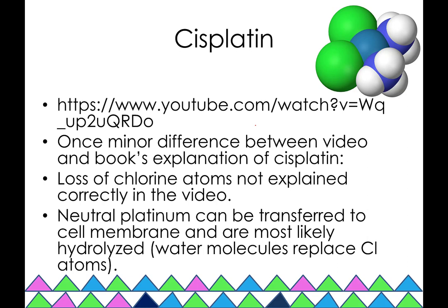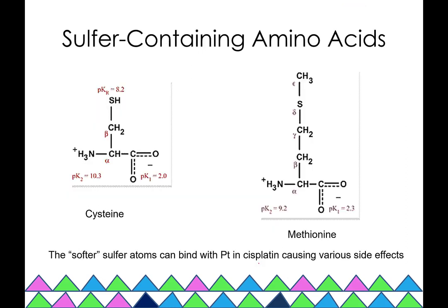Cisplatin crosses the cell membrane through passive diffusion because it is neutral. Once inside, the cisplatin is likely hydrolyzed, meaning water molecules replace the chloro ligands. There are side effects: cisplatin can also bind amino acids such as cysteine and methionine, which contain sulfur atoms with lone pairs that can donate to platinum. Since platinum is relatively soft and sulfur is a softer Lewis base, these interactions cause various side effects, and it can also kill many healthy cells.